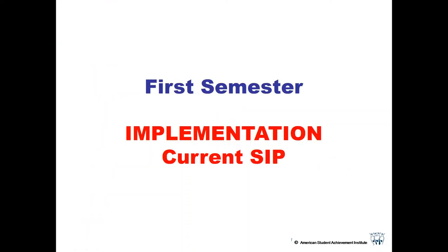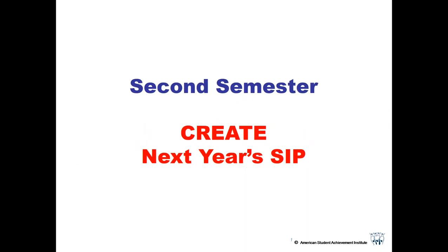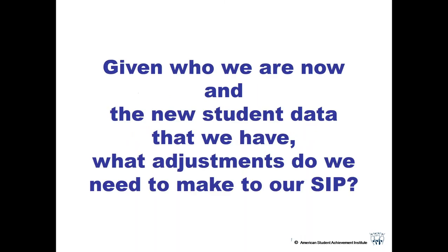First of all, we'll do a quick review. Remember the first semester of this year, you were looking at the implementation of your current School Improvement Plan. So you looked at all of the interventions that you had planned last year for this year, and this year you've been implementing them. Second semester, you've been working on creating next year's School Improvement Plan, and this is your final discussion in helping your school do that.